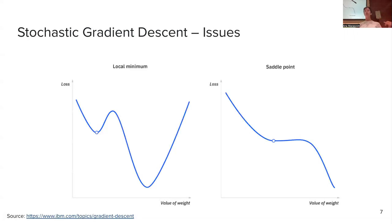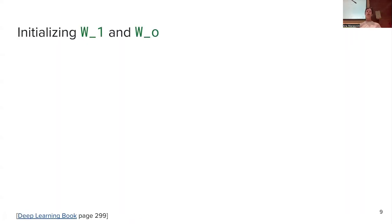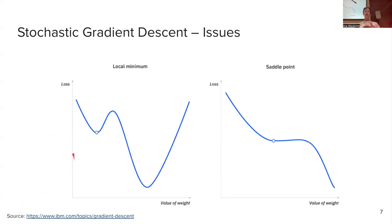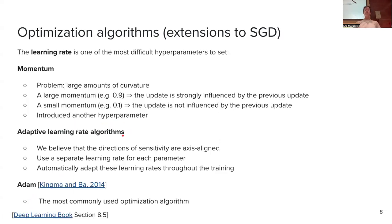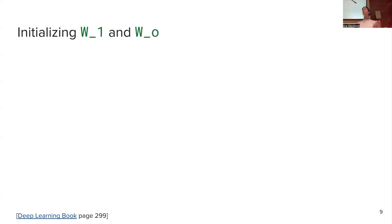Another important thing is how we initialize our weights. Where you start matters: starting from different positions will give you widely different solutions. Previously I said we randomly initialize parameters, but we actually use a specific method.